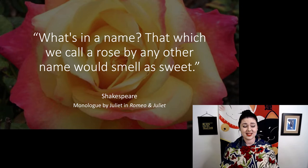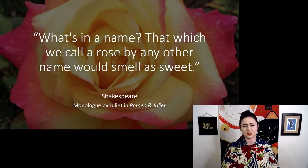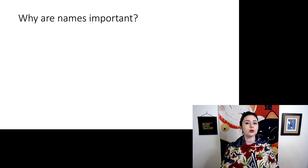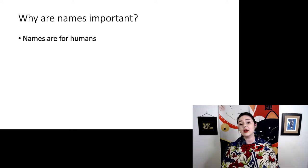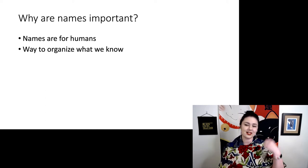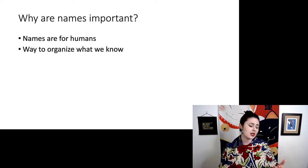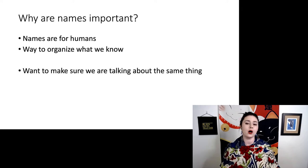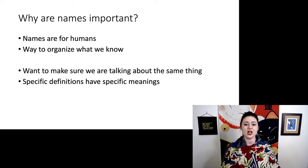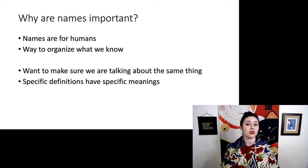Now let's talk about the issue of names and whether names are important. Juliet is correct that our names have no effect on the natural world — the natural world just is. But names are still important. Names are really for humans; they do not affect the natural world at all, but they are a way for us to organize what we know. There are interesting theories in linguistics and psychology about how we encode ideas — look into schema theory. Names allow us to organize what we know into concrete concepts in our brain, and they allow two different people to confirm they're talking about the same thing. Especially in science, those details really do matter. These specific definitions allow us to encode specific but also complicated meanings, so make sure you really understand the definitions of these terms.